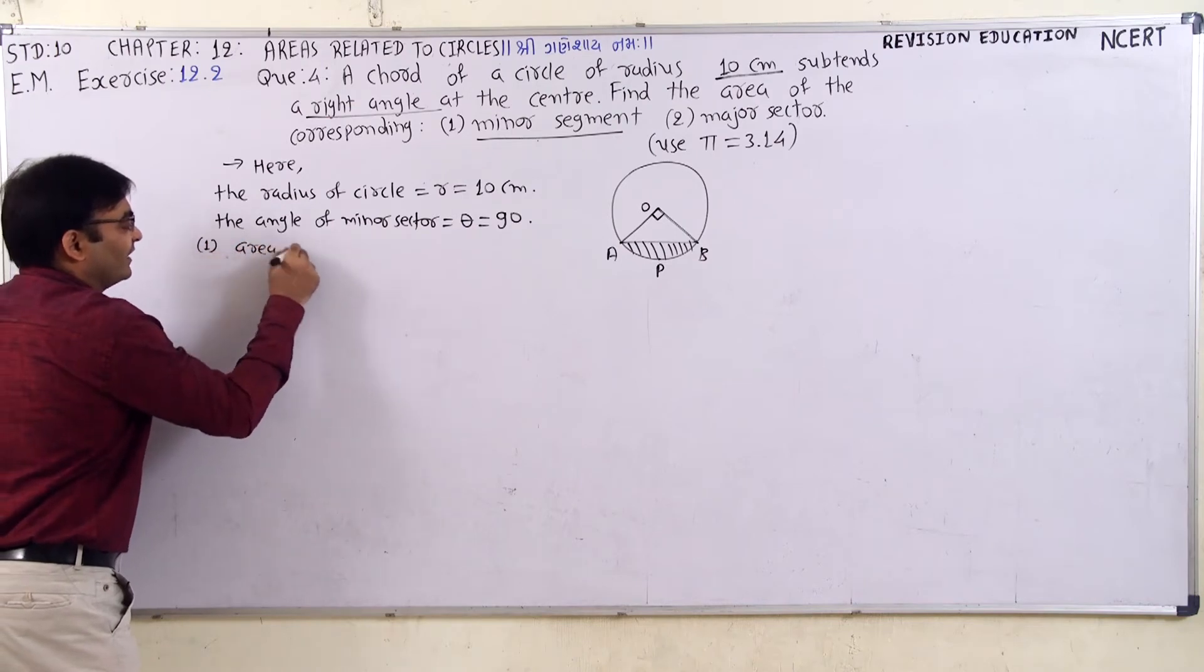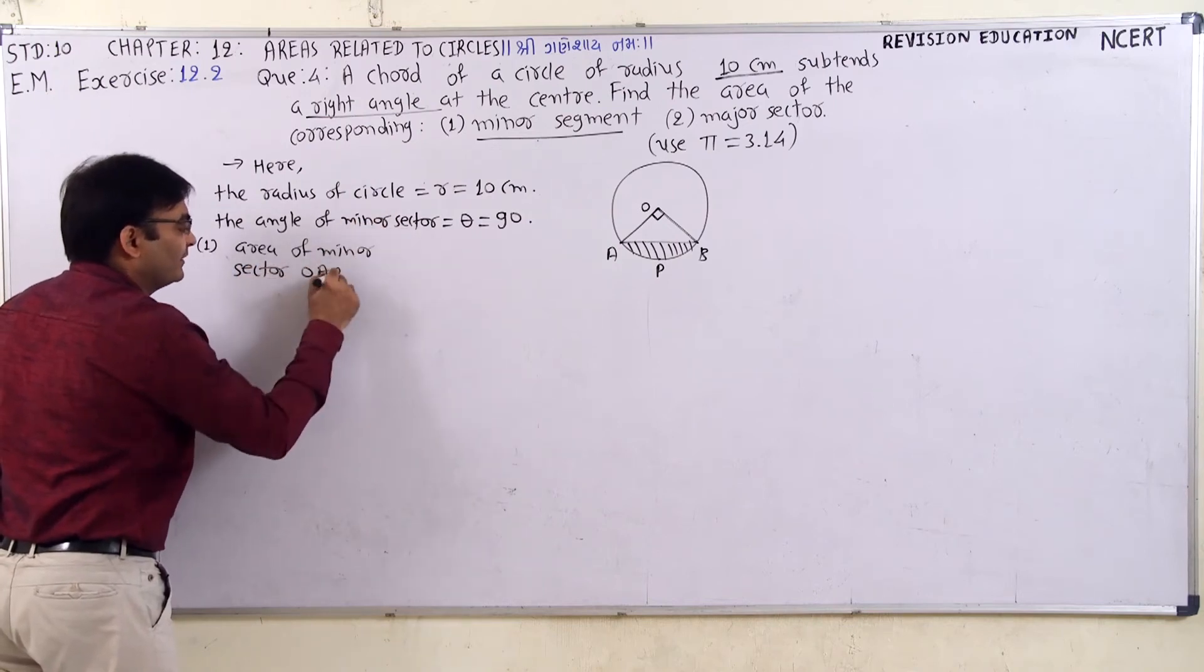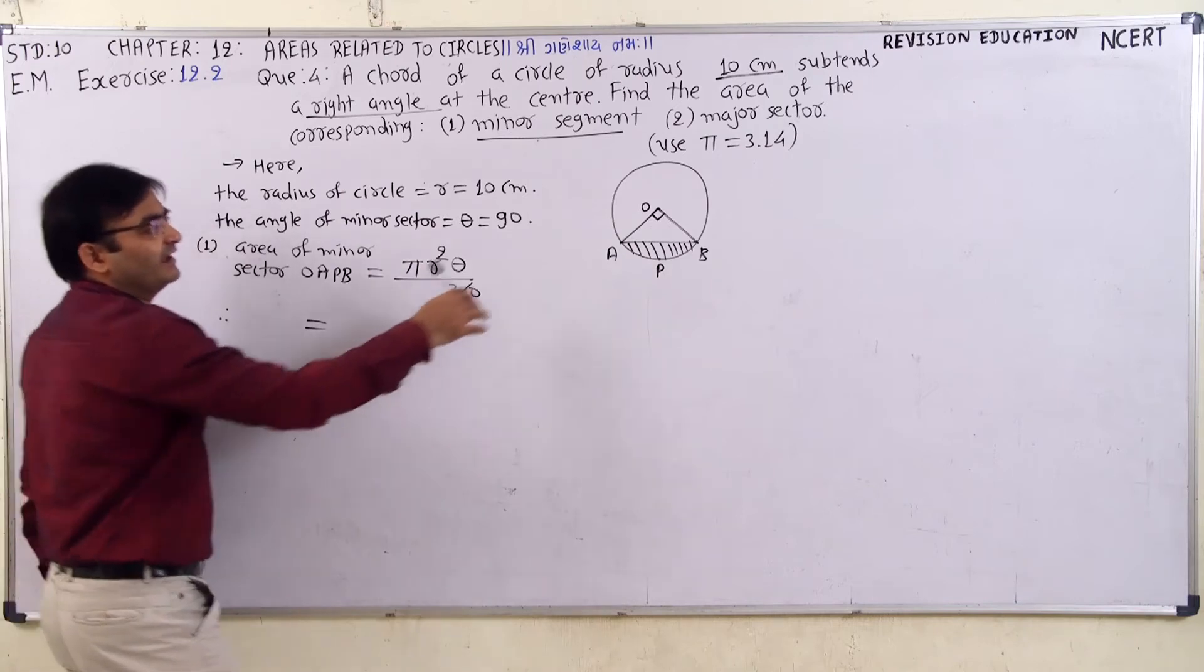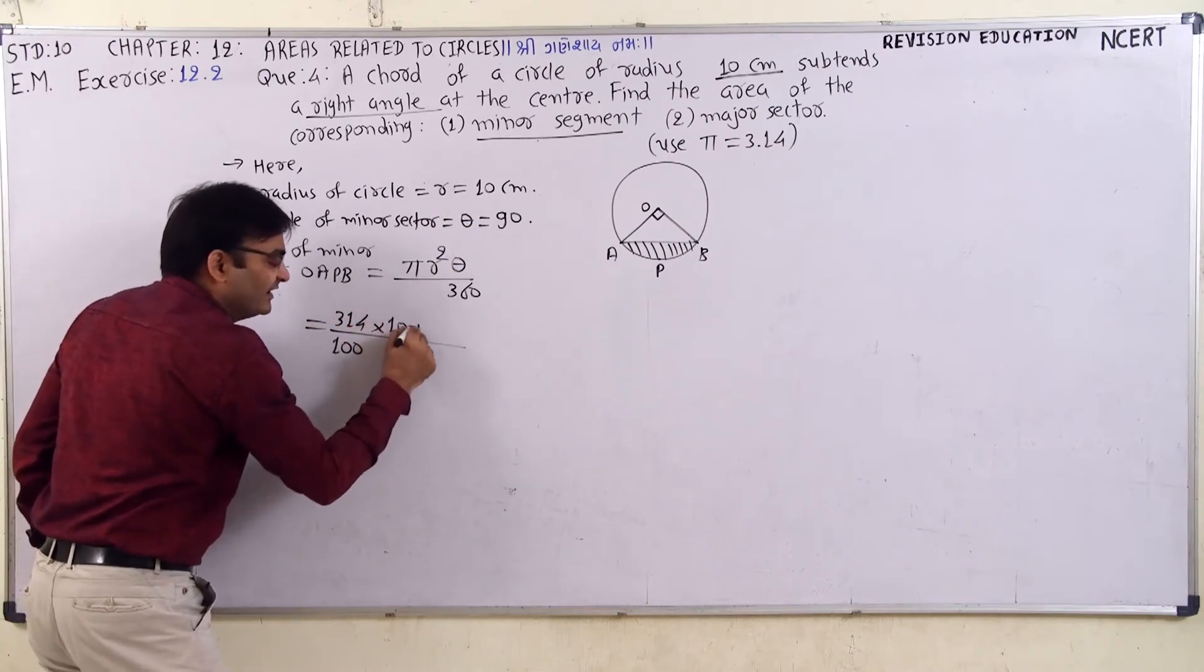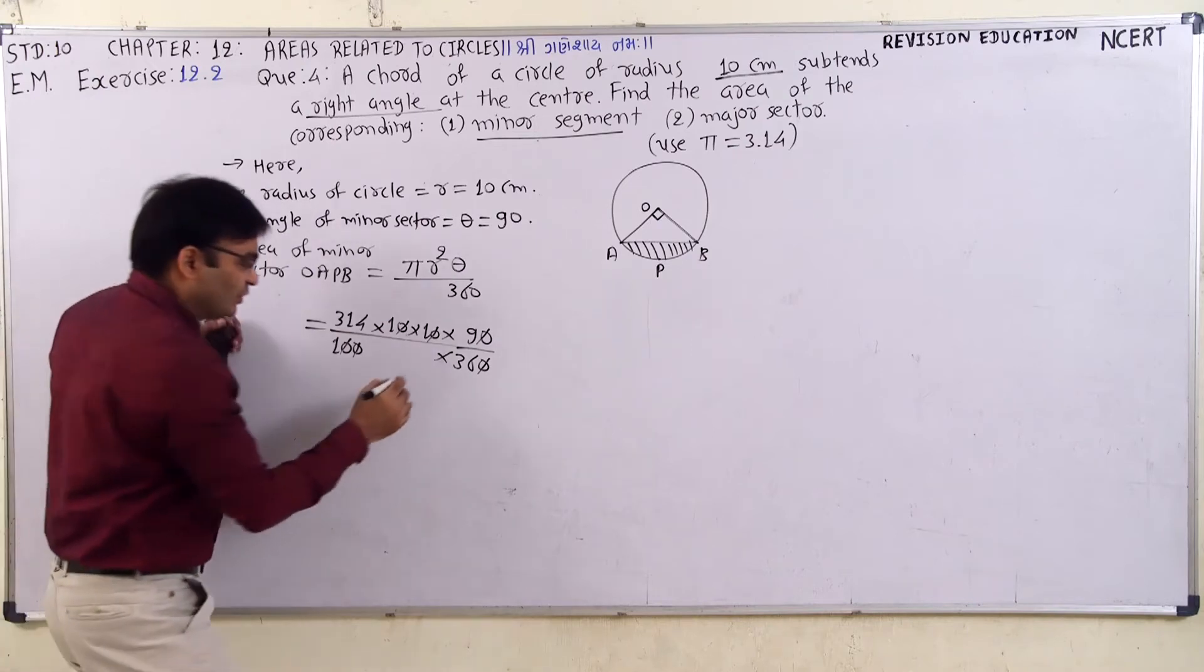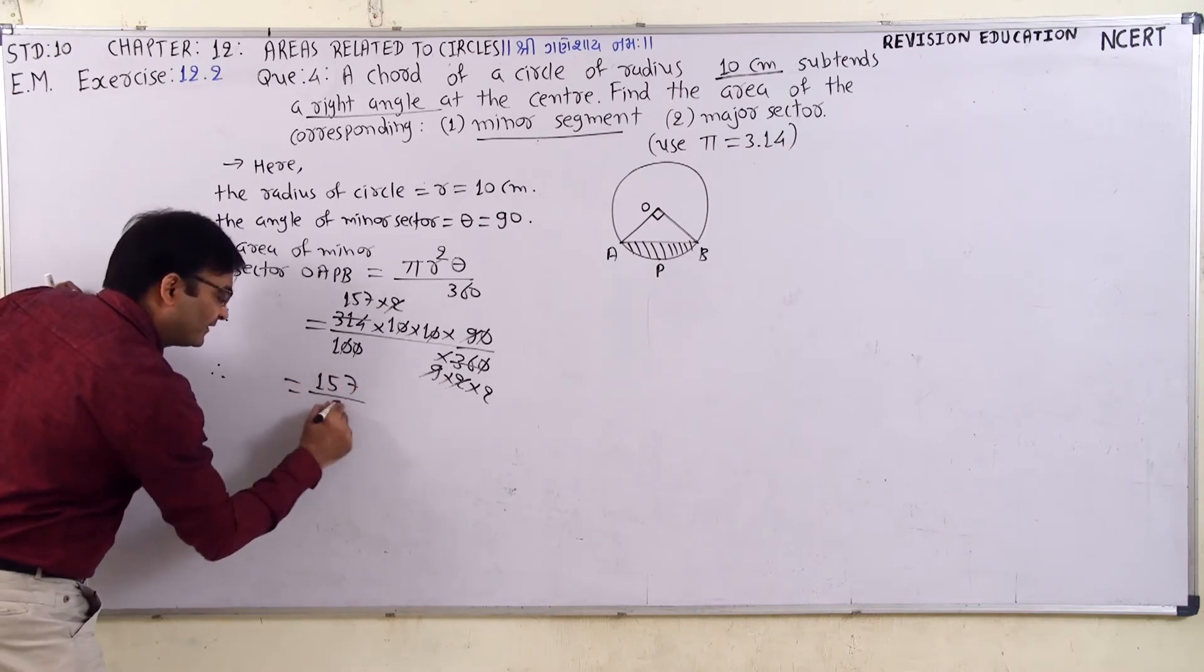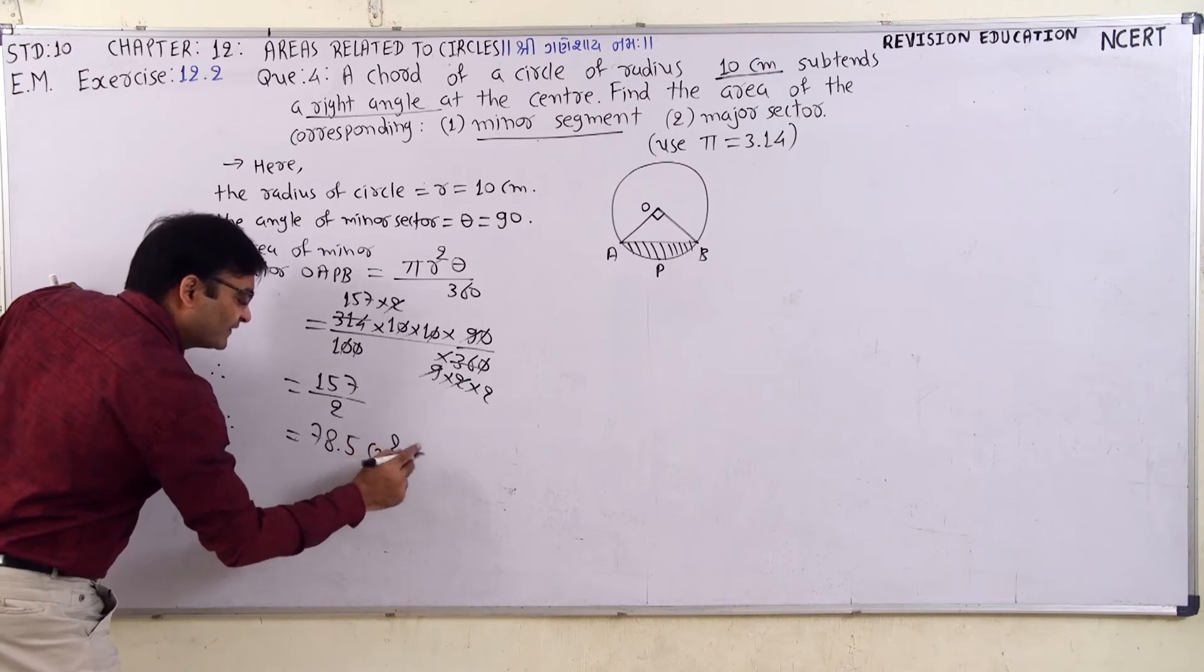The area of minor segment, the area of minor sector. So 157 by 2, 2 and 7 we have 14, so here 78.5 centimeter square. This is the area of minor sector.